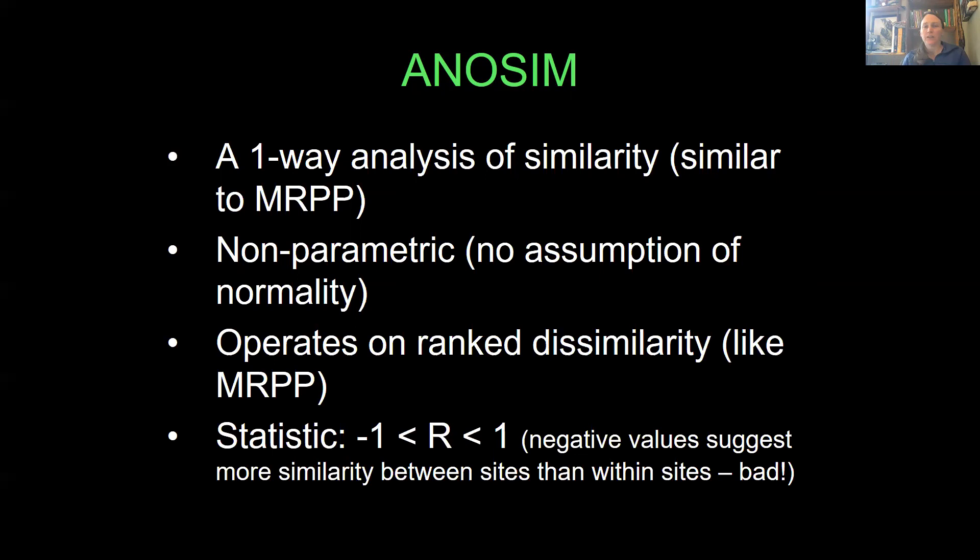And it's kind of confusing. They should have used a different letter because it looks kind of like the R from correlation. It can range from negative one to one. Negative values of an ANOSIM R actually suggest there's more similarity between your sites than within your sites, which is actually bad. So you don't want a negative R. But it'll give you a P value and an R value. MRPP gives you an A value, which is your statistic, and a P value.